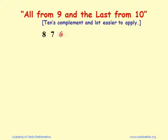Let's consider the number 876. 'All from nine' means: 8 from 9 is 1, 7 from 9 is 2. The last digit, 6, is 'last from ten': 6 from 10 is 4. So the result is 124. Another example: 5555. 5 from 9 is 4, 5 from 9 is 4, 5 from 9 is 4, and the last digit: 5 from 10 is 5. Wait — 4 from 10 is 6.